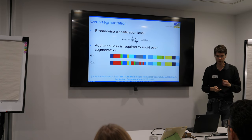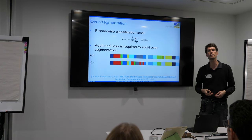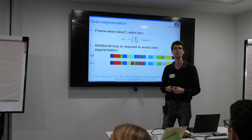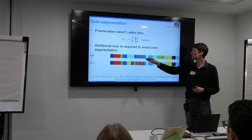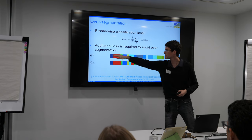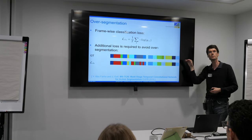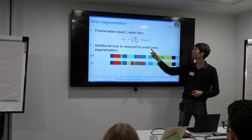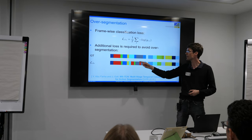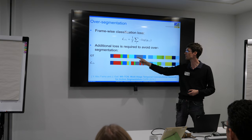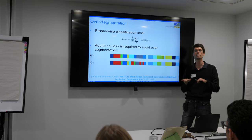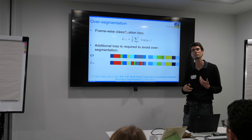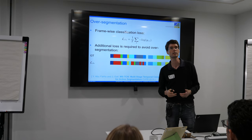We still had a problem with training using standard cross-entropy, minimizing the loss for each frame. When looking at the results — a temporal segmentation of the ground truth versus our model's prediction — even with multiple stages, we had over-segmentation. For example, a gray action with a red action incorrectly inserted in between. This kind of over-segmentation occurs very often in sequence-to-sequence models.